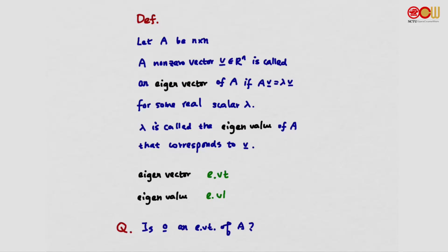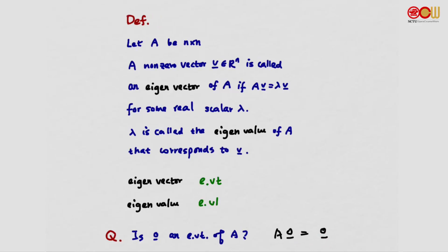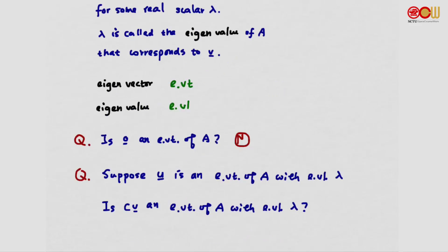A question: is the zero vector an eigenvector of A? Well, the product A and the zero vector is indeed equal to the zero vector. Would this make the zero vector an eigenvector of A? Let's look at the definition. Indeed, AV equal to lambda V is satisfied, but for V to be an eigenvector of A, it should be a non-zero vector. So no, the zero vector is not an eigenvector of A.